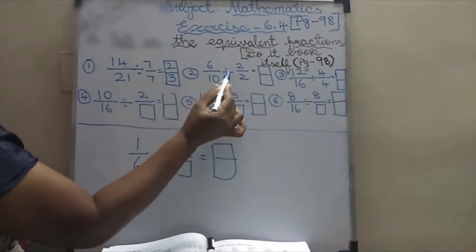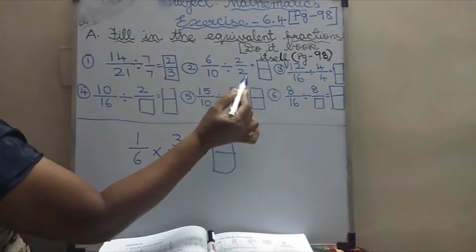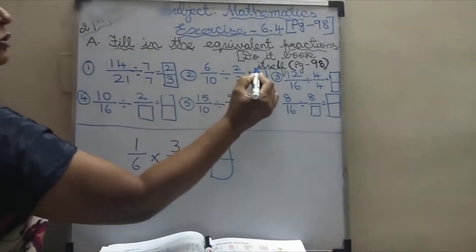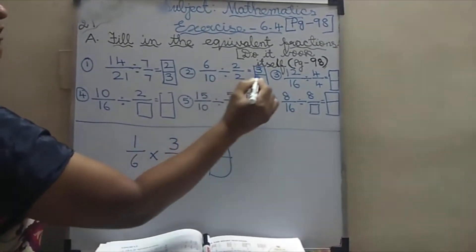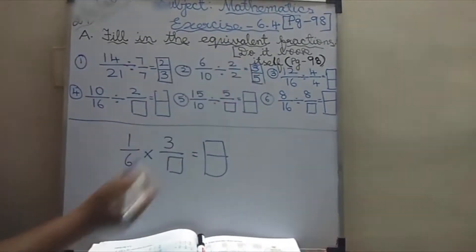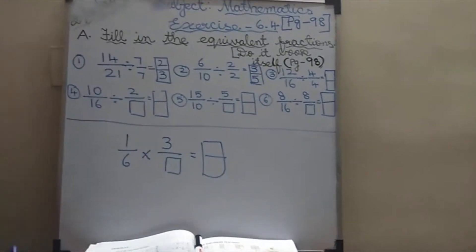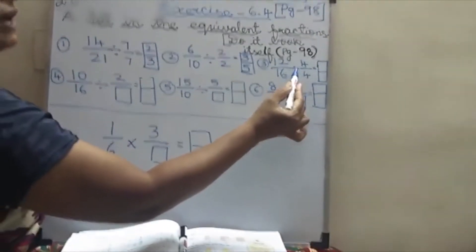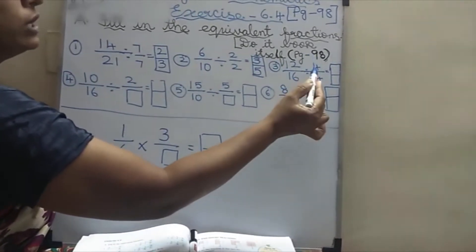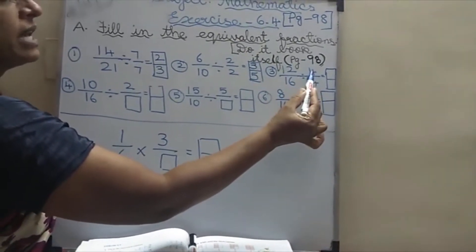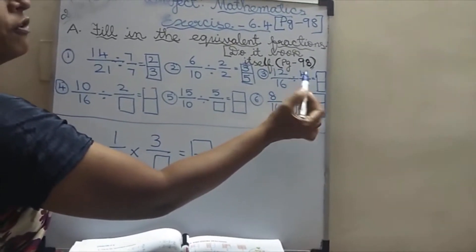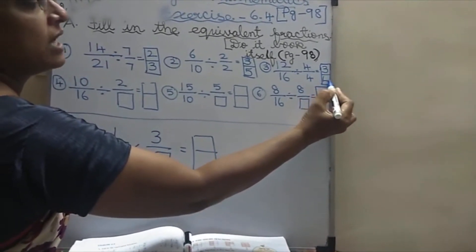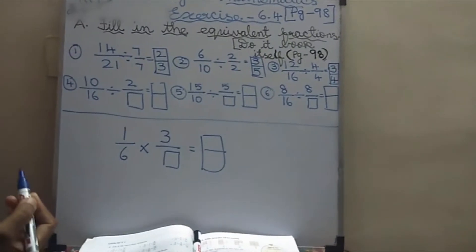Second one: 6 by 10 divided by 2 by 2. Yes, in 2 tables, 6 goes. Say the 2 tables — 3 2s are 6 and 5 2s are 10. And here, 12 by 16 divided by 4 by 4. If you say the 4 tables — 4 3s are 12 and 4 4s are 16. Very easy, you know, children.